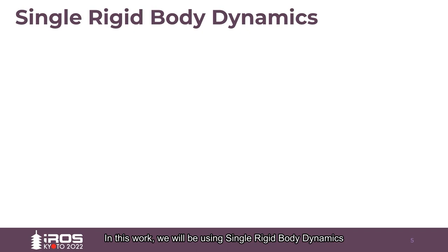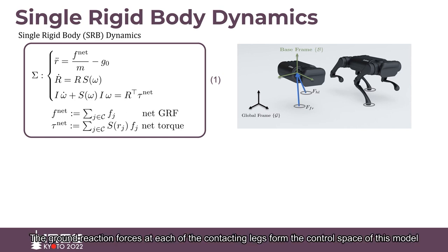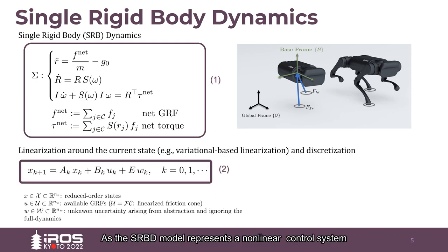In this work, we will be using single rigid-body dynamics of the floating base of the robot. The SRBD model includes the position and velocity of the center of mass, together with the orientation and angular velocity as its state space. The ground reaction forces at each of the contacting legs form the control space of this model. As the SRBD model represents a non-linear control system, we linearize it using variation-based linearization and obtain a linear time-varying dynamics at every sample time.